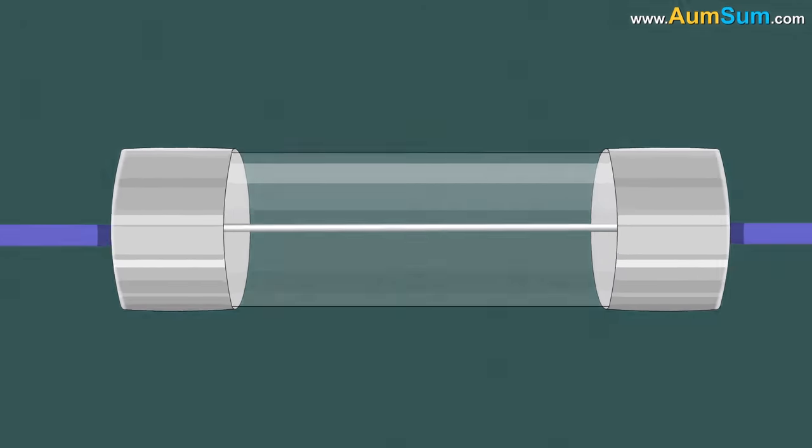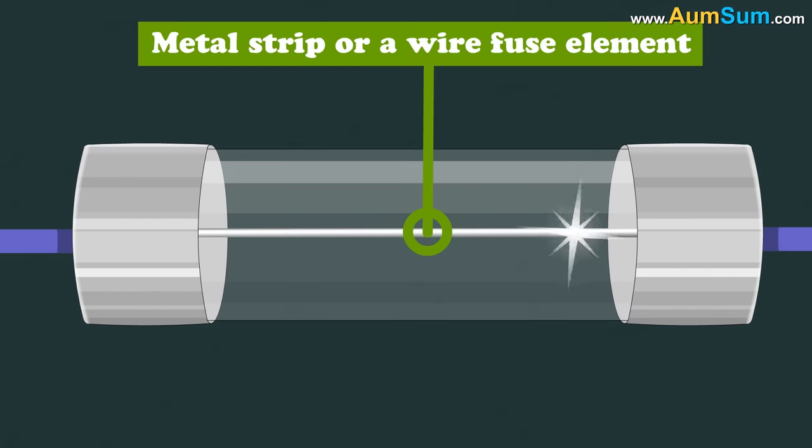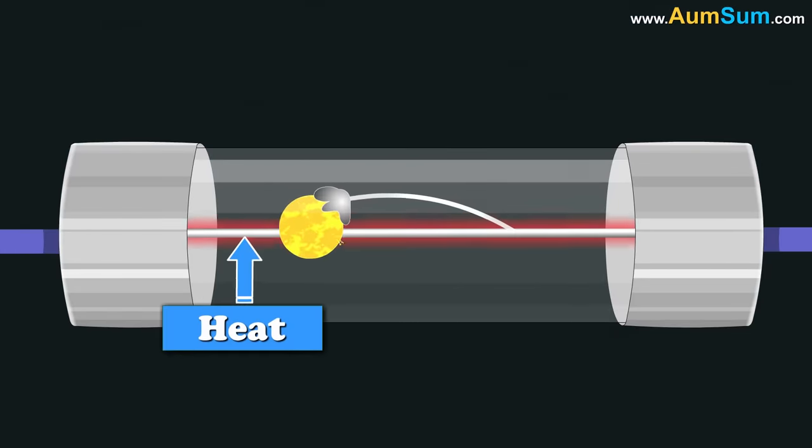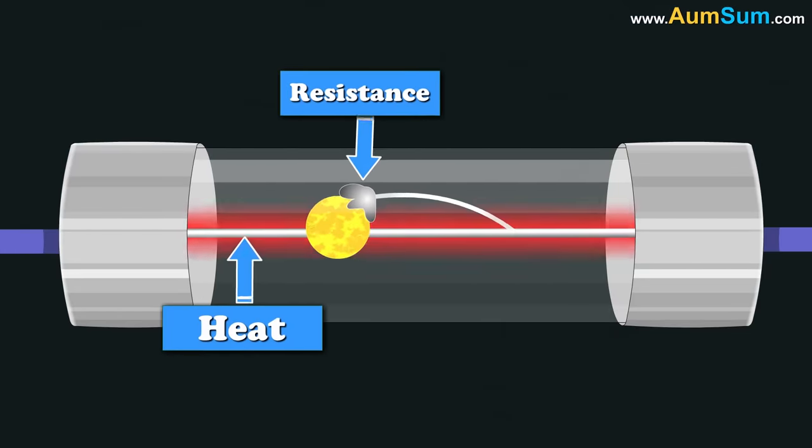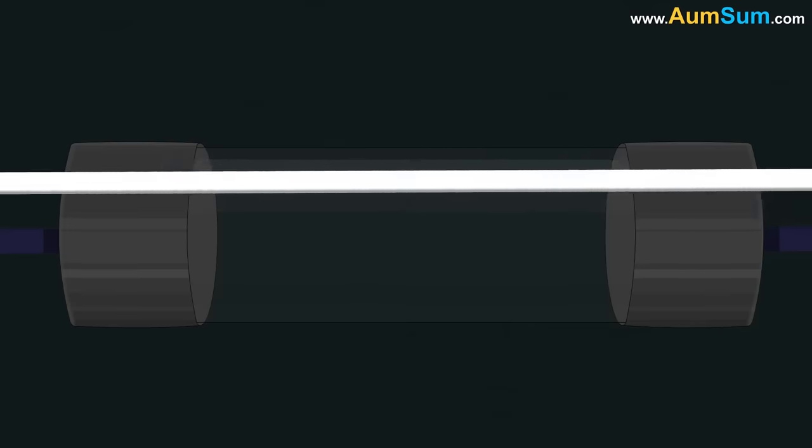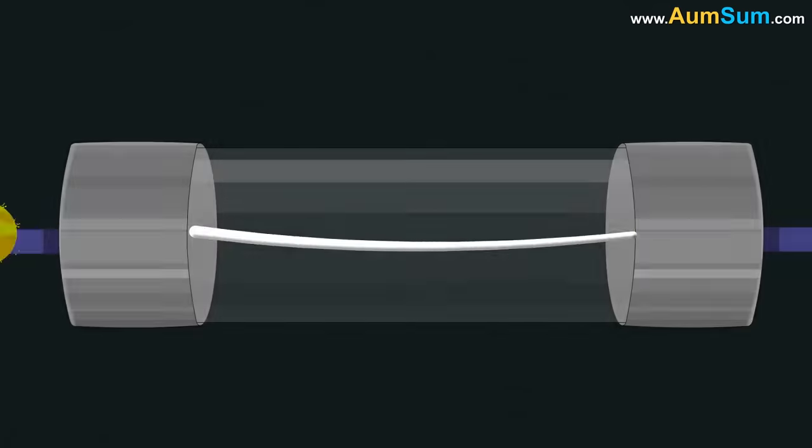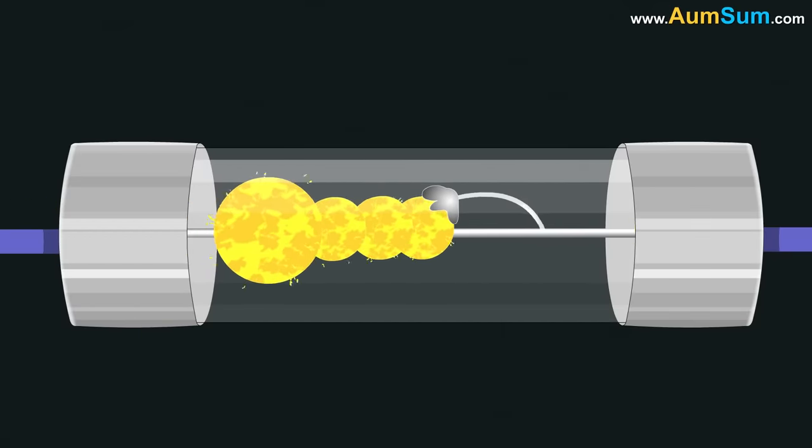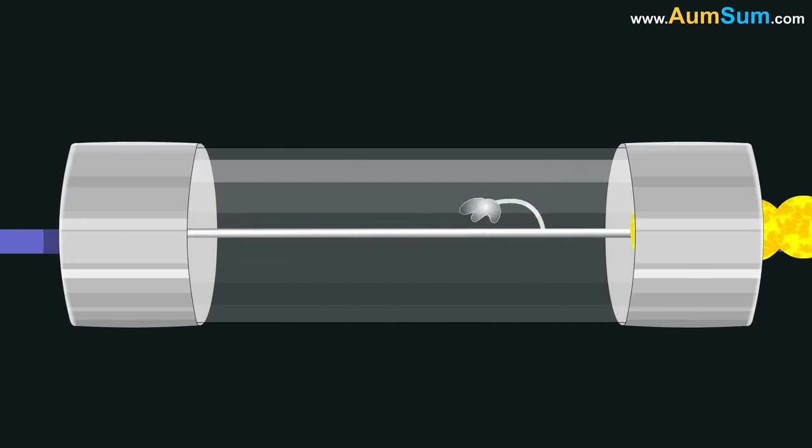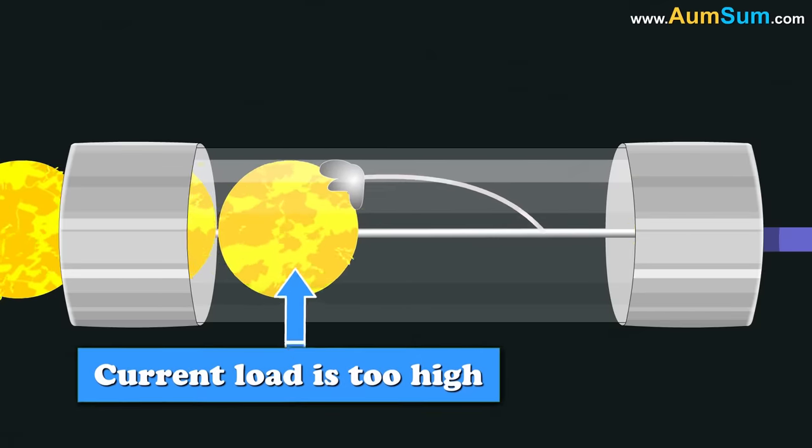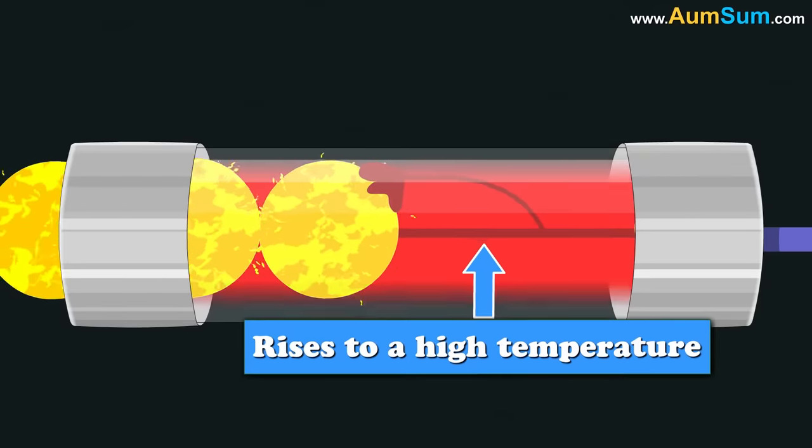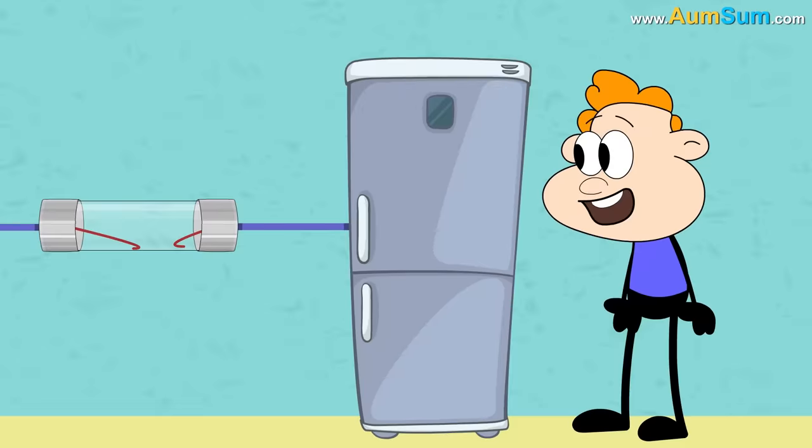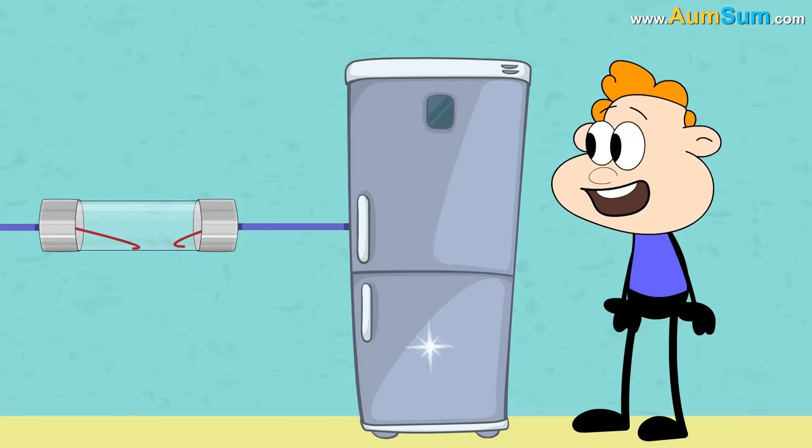A fuse consists of a metal strip or a wire fuse element. When current starts flowing through the fuse element, heat is generated due to resistance of the fuse element. The fuse element is constructed in such a fashion that when normal current flows or a small current spike occurs, it does not cause the fuse element to attain a high temperature. But when the current load is too high, the fuse element rises to a high temperature and melts. Thus, breaking the circuit and in turn, saving the electrical appliance from damage.